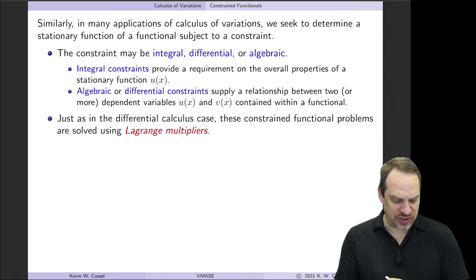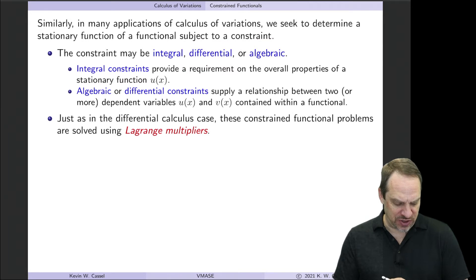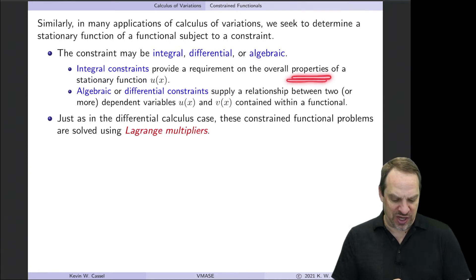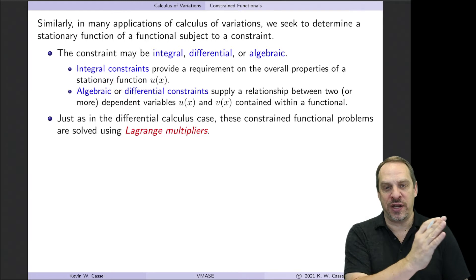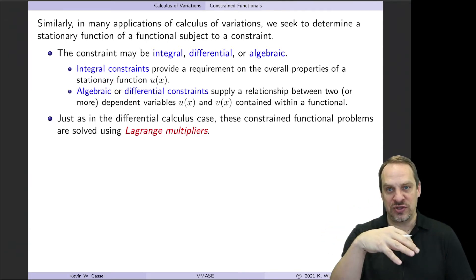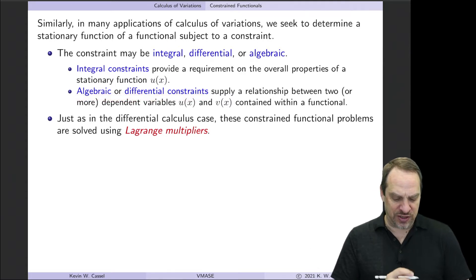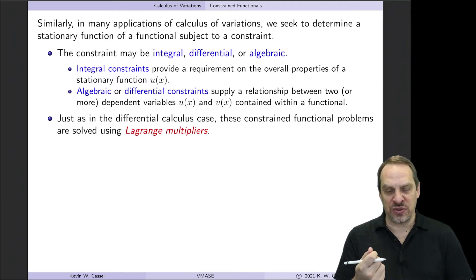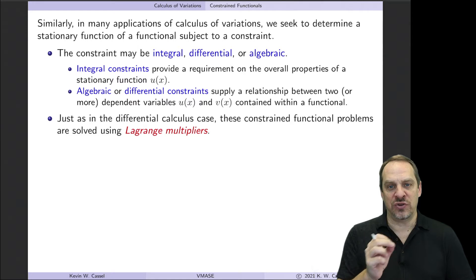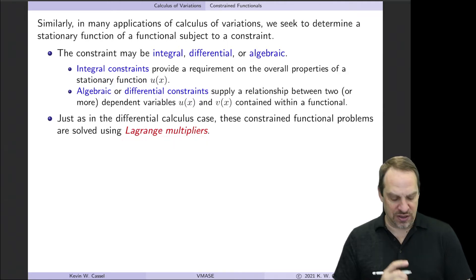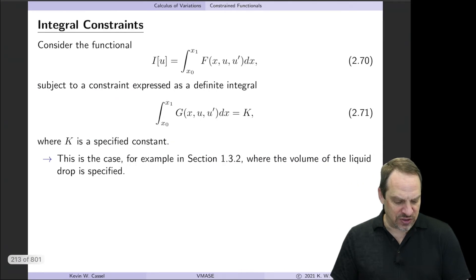We'll discuss integral constraints in this video, and then differential and algebraic constraints in later videos. Integral constraints provide a requirement on the overall behavior of the stationary function over the entire domain — integrated across the domain, such as the volume of our liquid drop. Algebraic and differential constraints, on the other hand, give a relationship between two or more dependent variables that must hold at every point within the domain. They're a little different, but we'll use the Lagrange multiplier method in both cases.